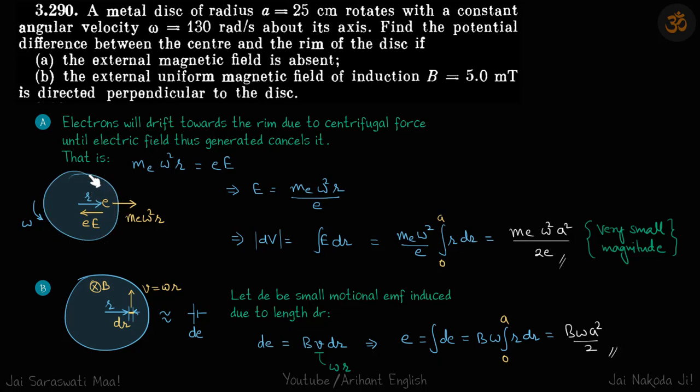We are given a metal disk which is rotating with angular velocity omega. We are supposed to find the potential difference between the center and the rim.